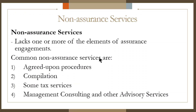Can you still recall the 5 elements of the assurance engagements? The first one is the 3-party relationship. Number 2 is subject matter. The third one, we have the suitable criteria. Number 4 is sufficient appropriate evidence. And the last one, of course, there should be an assurance report.